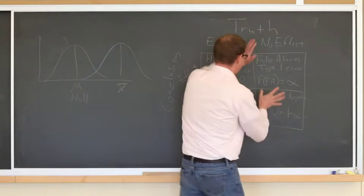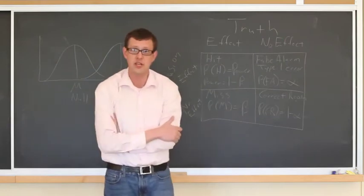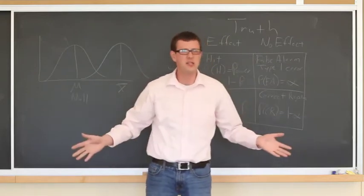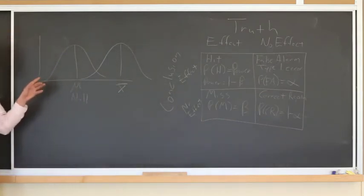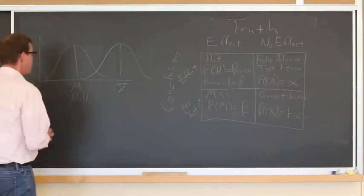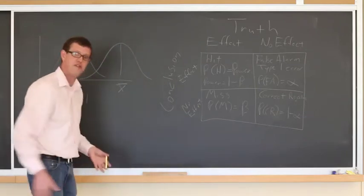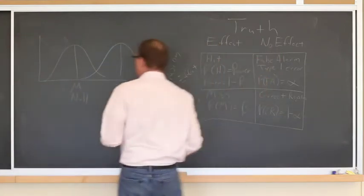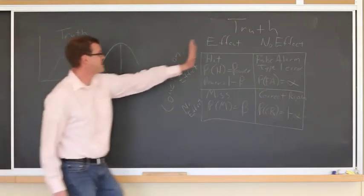Alpha is under complete control of the experimenter or the researcher. The researcher sets alpha, and that's what it is. We can know exactly what the probability of making a Type 1 error is based on the alpha level a researcher chooses. The opposite of a false alarm when there really is no effect is a correct rejection. I've drawn two distributions — one for the mean underneath a null hypothesis, and one for the mean we actually observed centered around the observed mean.